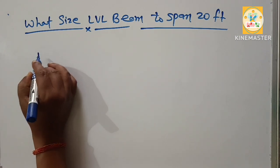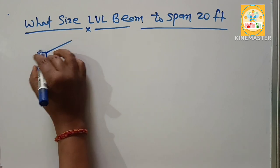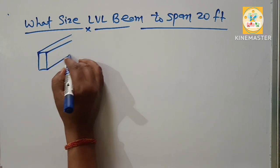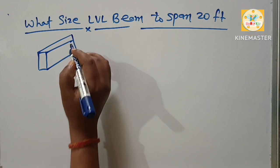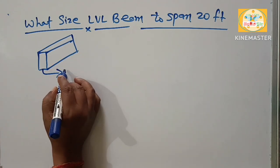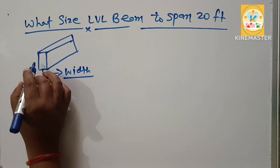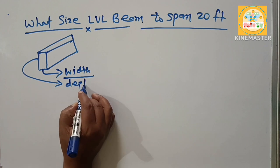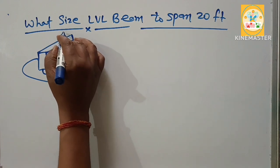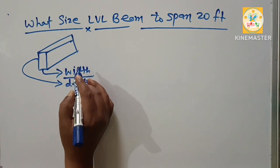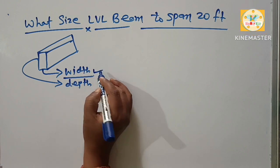Suppose this one is an LVL beam diagram, and understand about their sizing. This is their width of LVL beam, and this one is their depth. You have to find out the size of LVL beam, means you have to find out width and their depth.